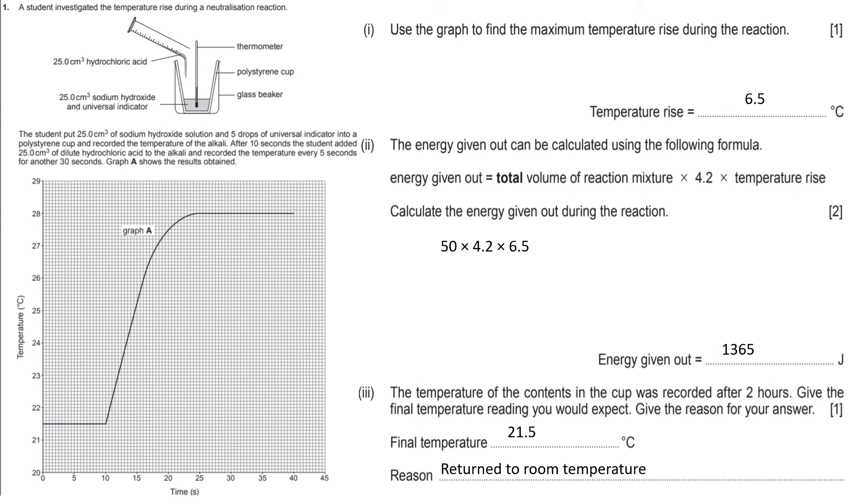Use the graph to calculate the maximum temperature rise during the reaction. Really, this is asking us for the change in temperature. So, we see the graph peaks at 28 degrees C, and it starts at 21.5 degrees C. If we take 28 away from 21.5, we'll get 6.5 degrees C.